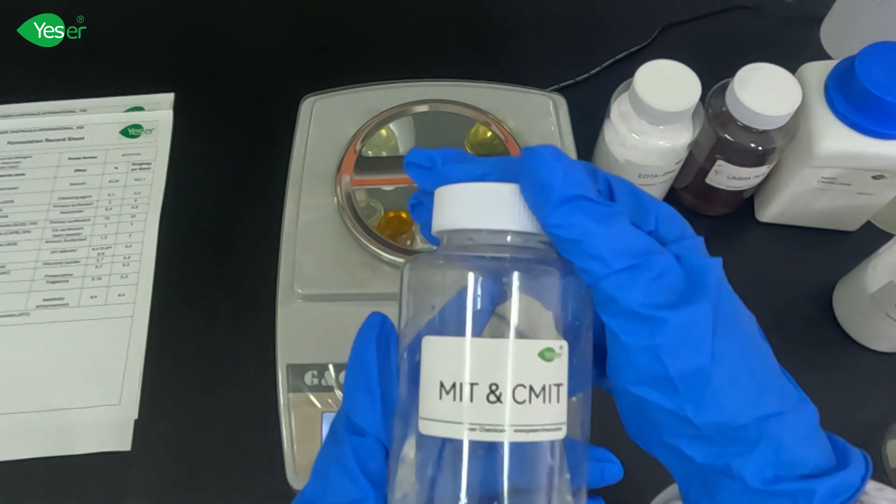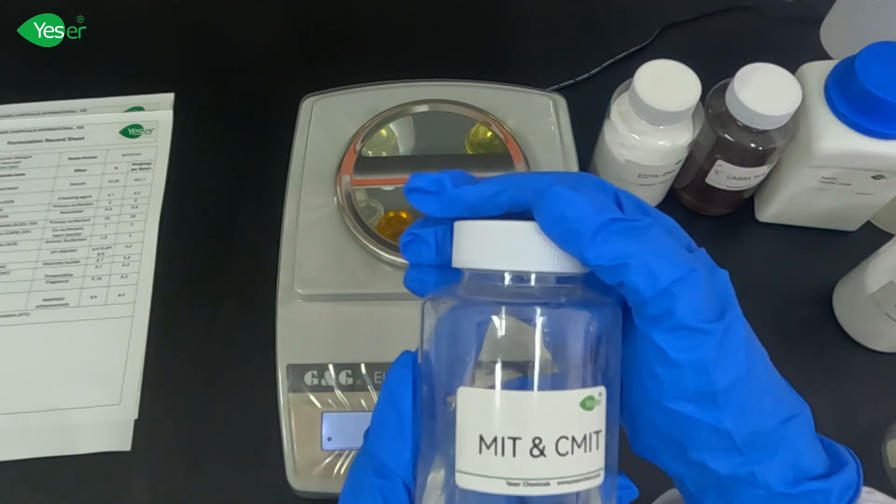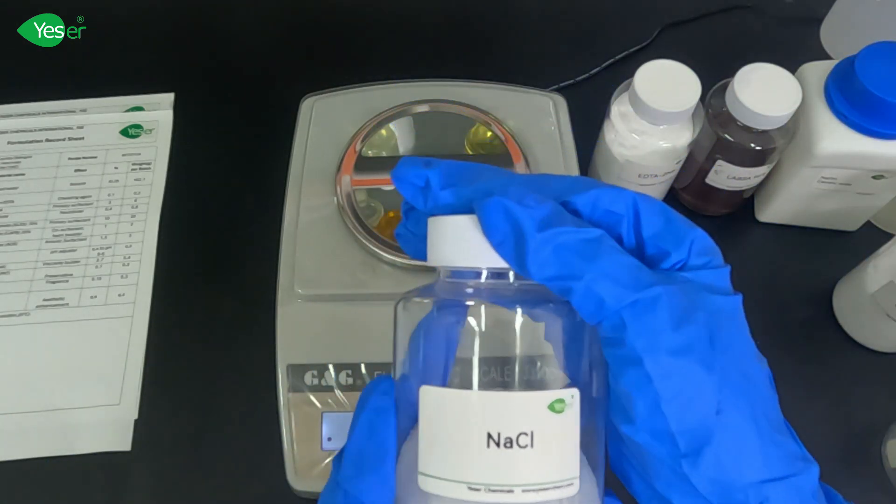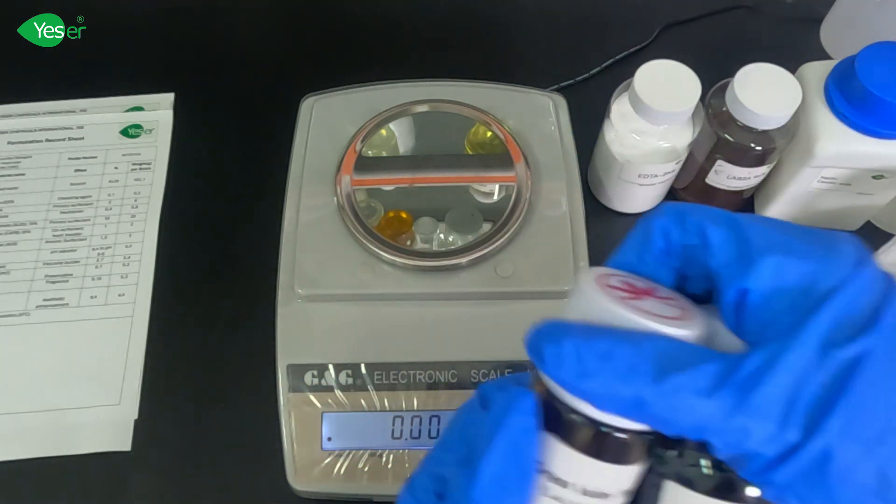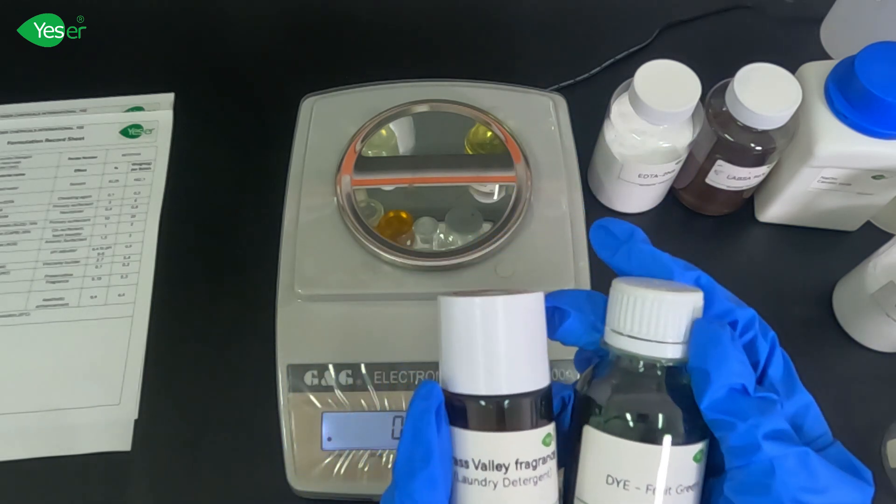For our preservative, we have MIT and CMIT. For our thickener, we will have salt or sodium chloride. And then we will add fragrance and dye in our formula.